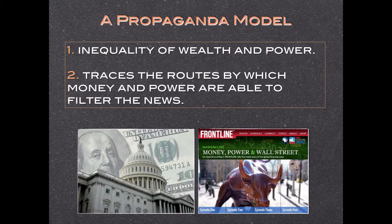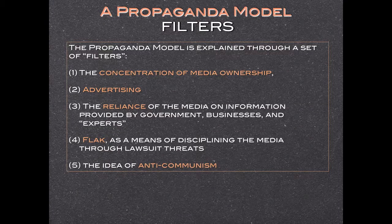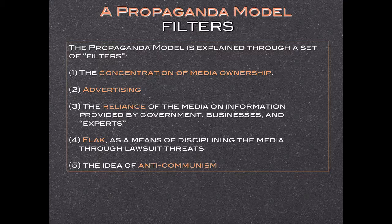In pure Marxist terms, the propaganda model focuses on the inequality of wealth and power and its multi-level effects on mass media interests. It traces the routes by which money and power are able to filter the news fit to print and publication. They marginalize dissent and allow the government and dominant private interests to get their messages across to the public. The propaganda model is explained through a set of five filters, which are very important and which we are going to discuss in class.